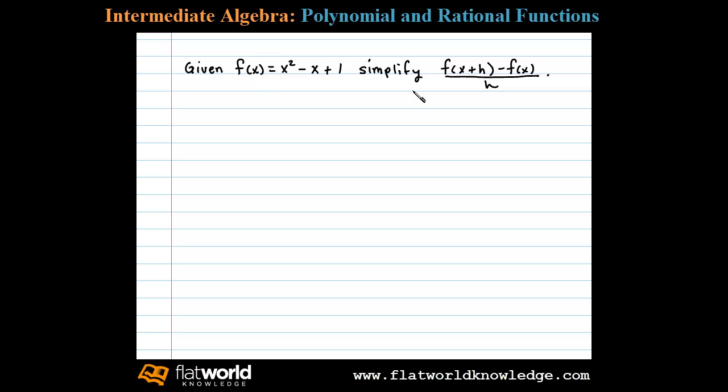Given f(x) = x² - x + 1, simplify [f(x+h) - f(x)]/h. In this problem we're assuming h is not equal to 0, and so we'll begin by finding f(x+h).